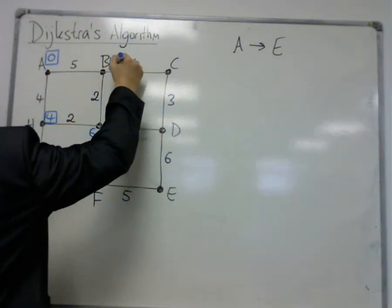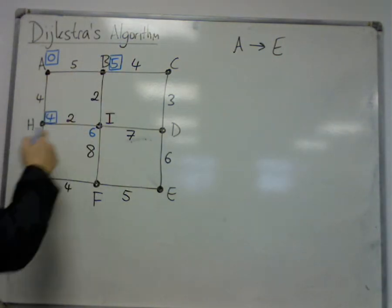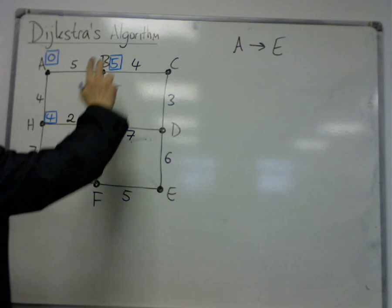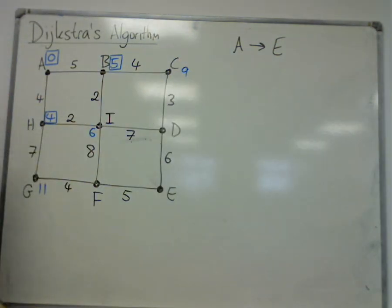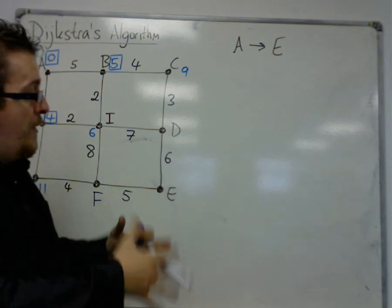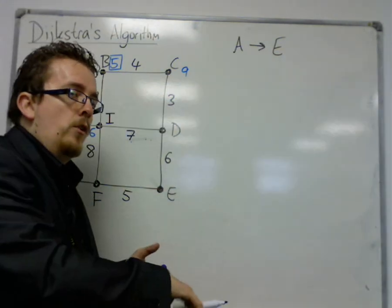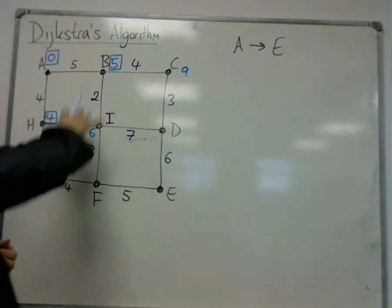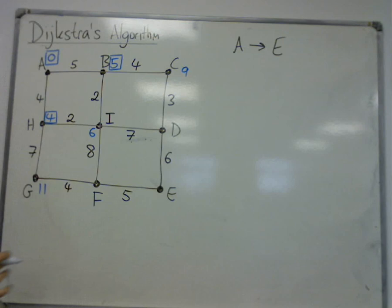So I pick 5. And I think, well, 5 plus 2 is 7, which isn't better than 6. 5 plus 4 is 9. Notice how I haven't written down 7. So if I find that there is a route to a vertex which is more than the one that is already there, I don't bother writing anything down. I ignore it.